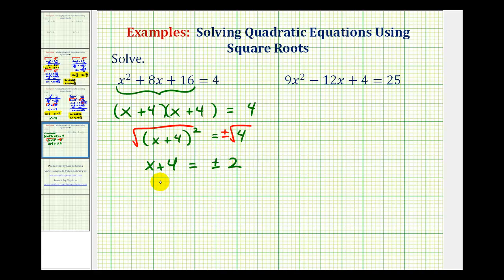And now to solve for x, we'll subtract 4 on both sides of the equation. So we have x equals negative 4 plus or minus 2.